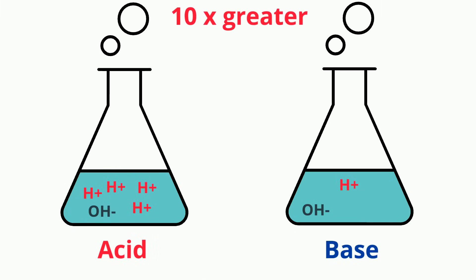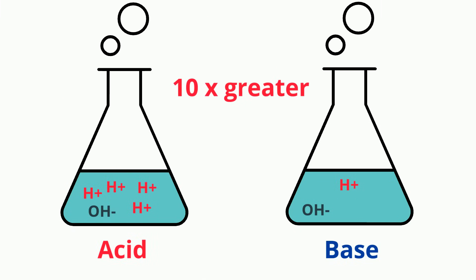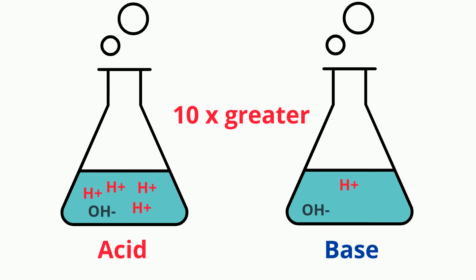Each number on the pH scale represents a ten-fold change in the acidity or basicness of the water. Water with a pH of 5 is ten times more acidic than water having a pH of 6.